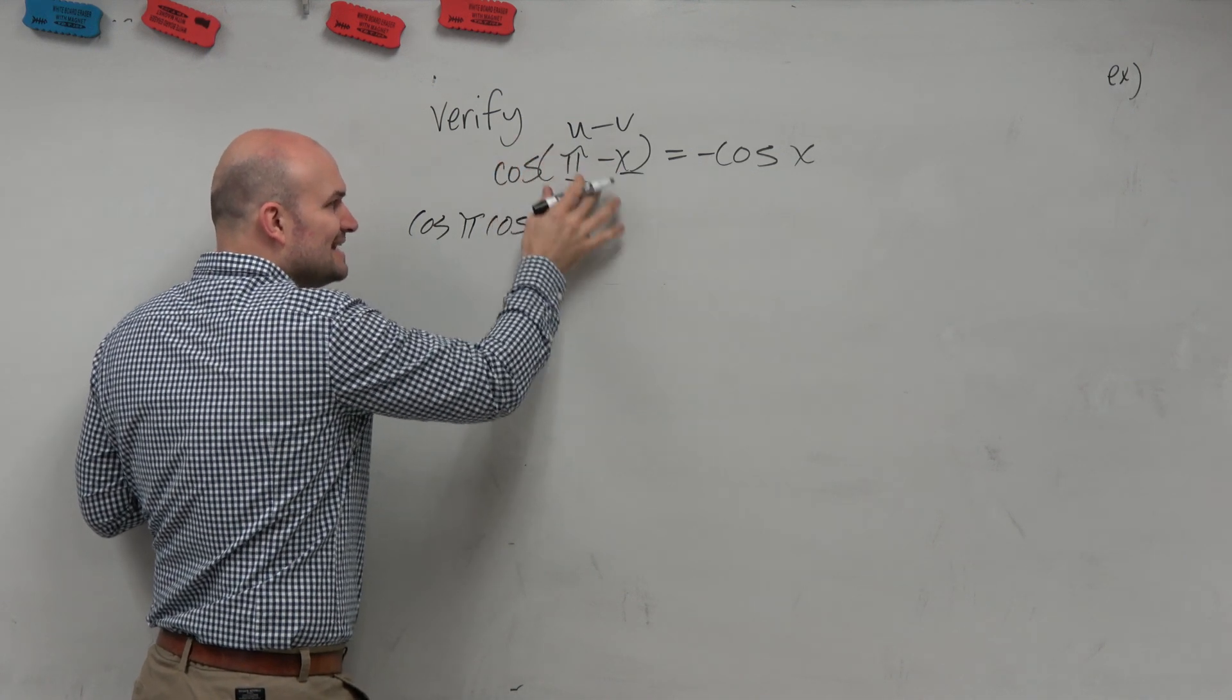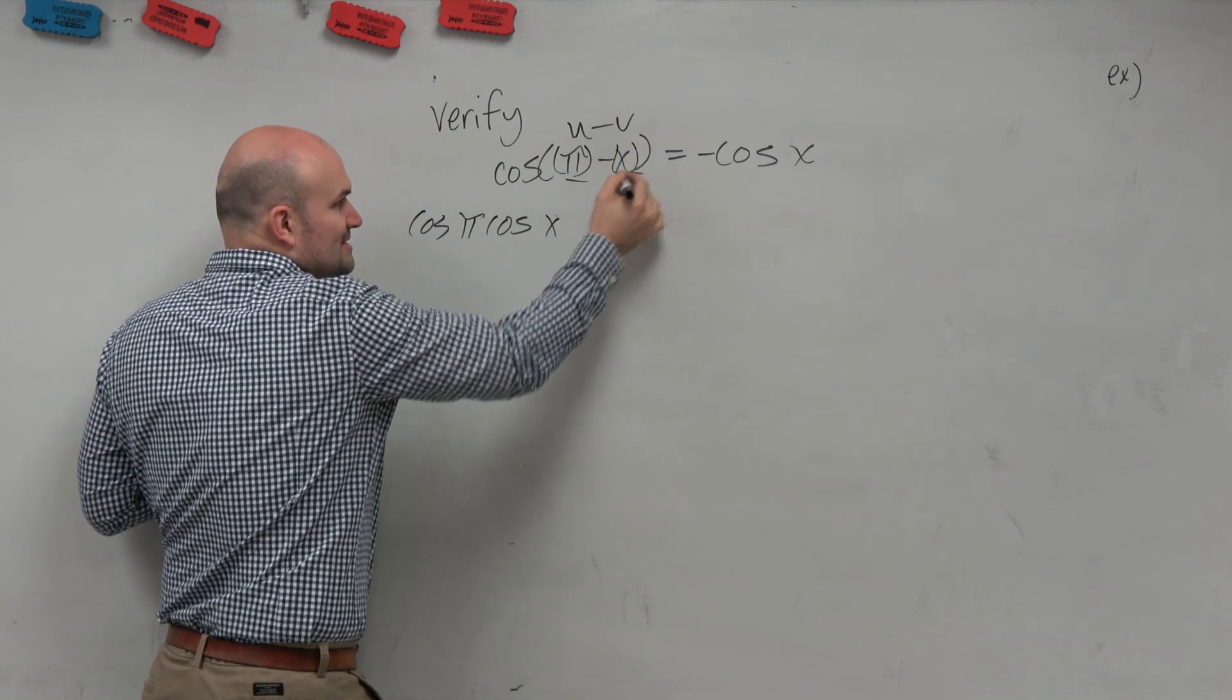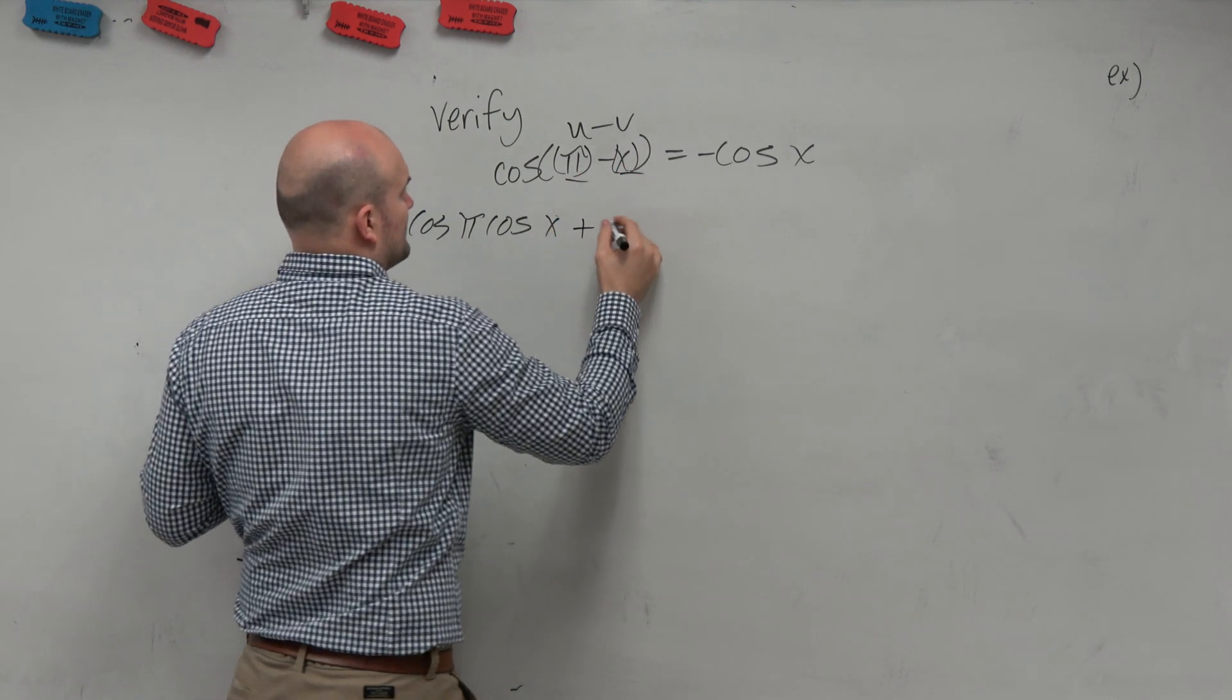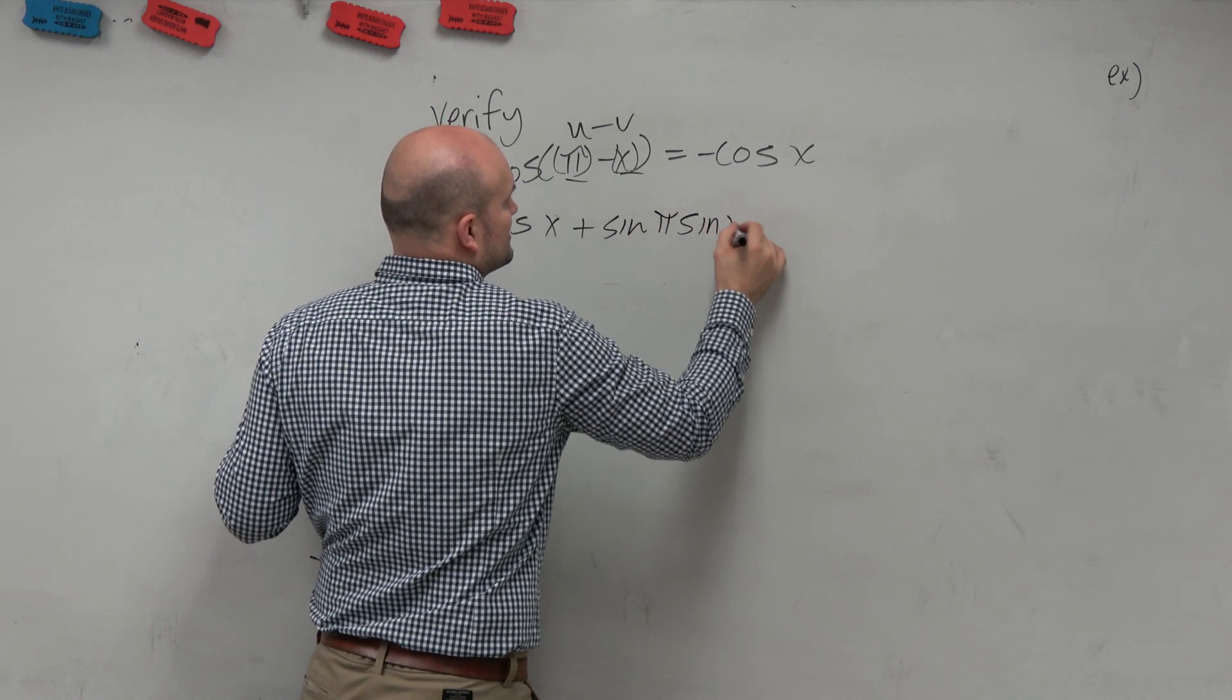Again, not negative x. These are like in parentheses. Then it's going to be plus sine of π times sine of x.